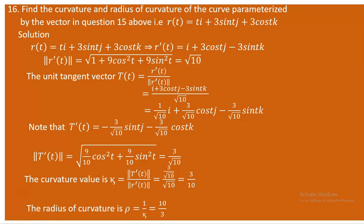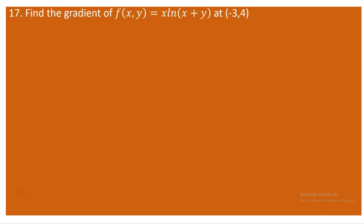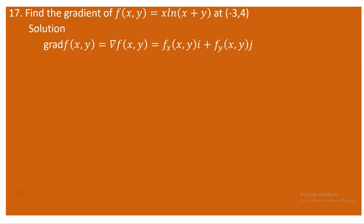Next is question 17: finding the gradient of a given function of two variables at the point (-3, 4). The gradient of f(x,y) is the normal vector to the surface f(x,y) at that point. The gradient is defined as the partial derivative of f with respect to x along the i-component, and the partial derivative with respect to y along the j-component.